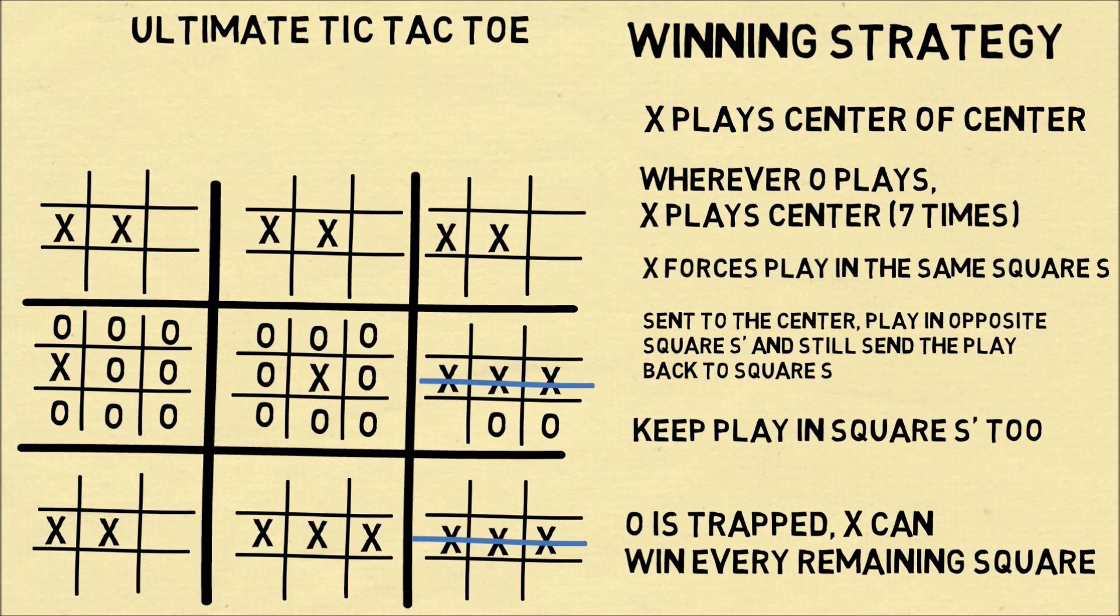So one by one, O is going to send you to squares. You can always complete a 3 in a row and force O back to the middle right. And eventually O will have to capitulate.